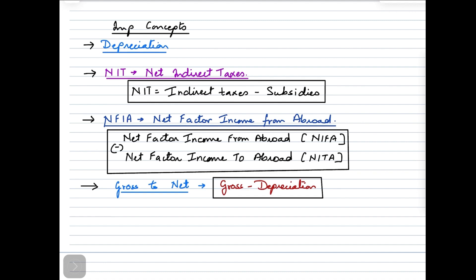The next component is NFIA — net factor income from abroad. Factor income from abroad means the income generated when residents of one country transact with residents of other countries. Net factor income from abroad is calculated as factor income from abroad minus factor income to abroad — that is, money flowing into our country minus money flowing out. This difference is NFIA, which is a very important component when talking about national income.